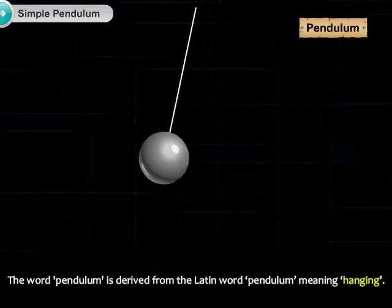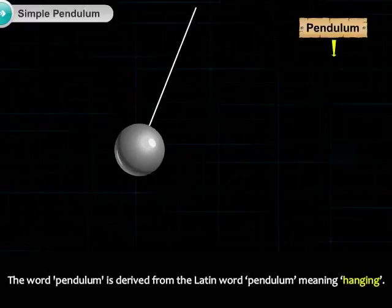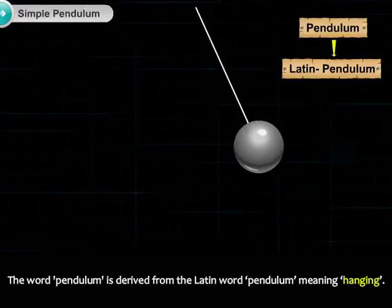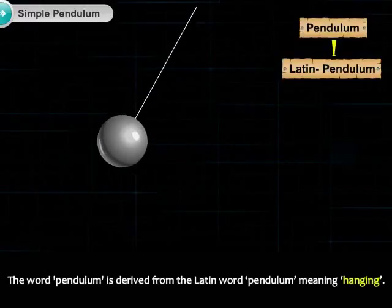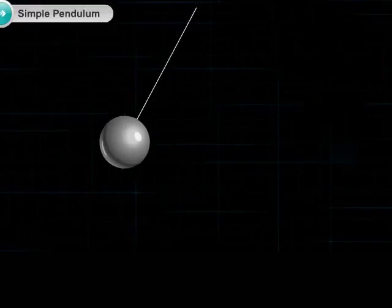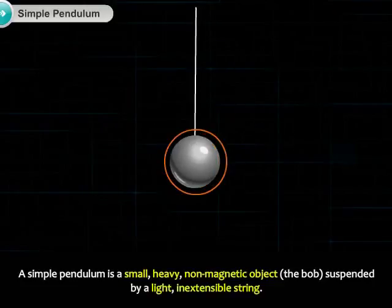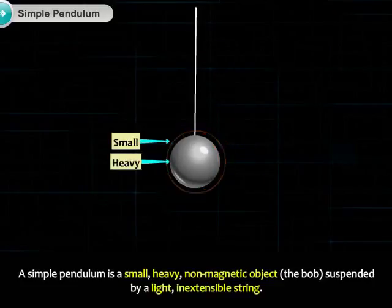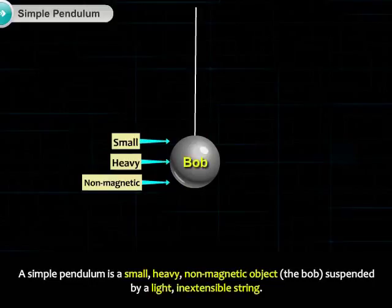The word pendulum is derived from the Latin word 'pendulum' meaning hanging. A simple pendulum is a small, heavy, non-magnetic object — the bob — suspended by a light, inextensible string.